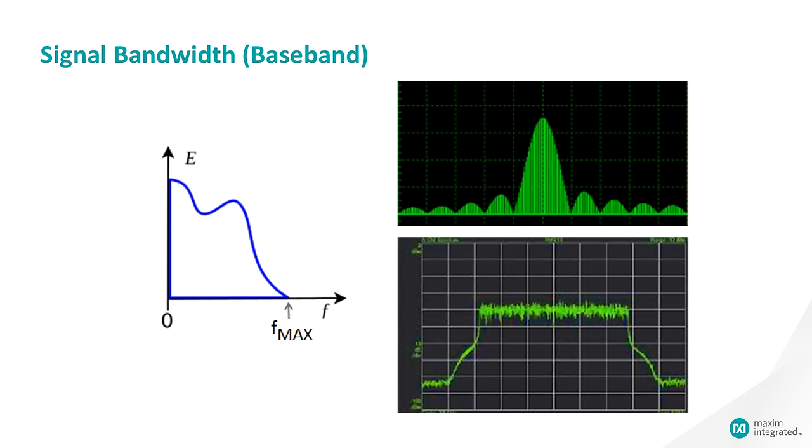Information signals, whether they are voice, video, data, analog or digital, they all occupy frequencies or a frequency range. The width of the frequency range they occupy is called the signal bandwidth or baseband.